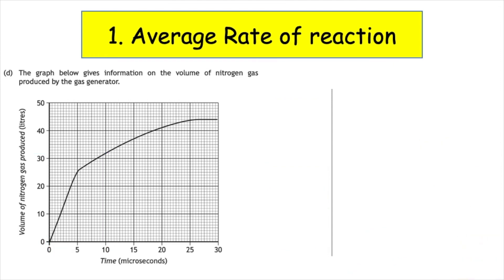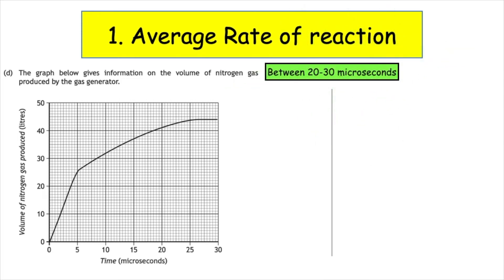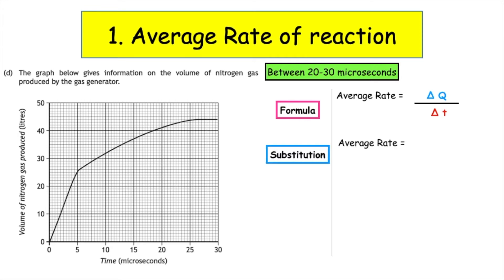Using the same graph, this time we're looking at the average rate of reaction between 20 and 30 microseconds. If you want to pause the video and have a go, you can resume when finished and we'll go through the answer together. First, write the formula: average rate is equal to change in quantity over change in time. The time given is 30 minus 20, and we put a box around 20 and 30 on the x-axis.